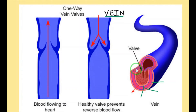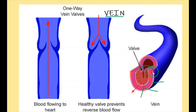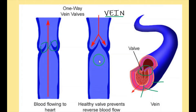All the veins carry deoxygenated blood. But the pulmonary vein carries oxygenated blood from the lungs to the heart. In arteries, all carry oxygenated blood, and the pulmonary artery carries deoxygenated blood — just the opposite. Internal valves are also present in the vein. The function of these valves is to prevent reverse blood flow. There are no internal valves in the arteries.